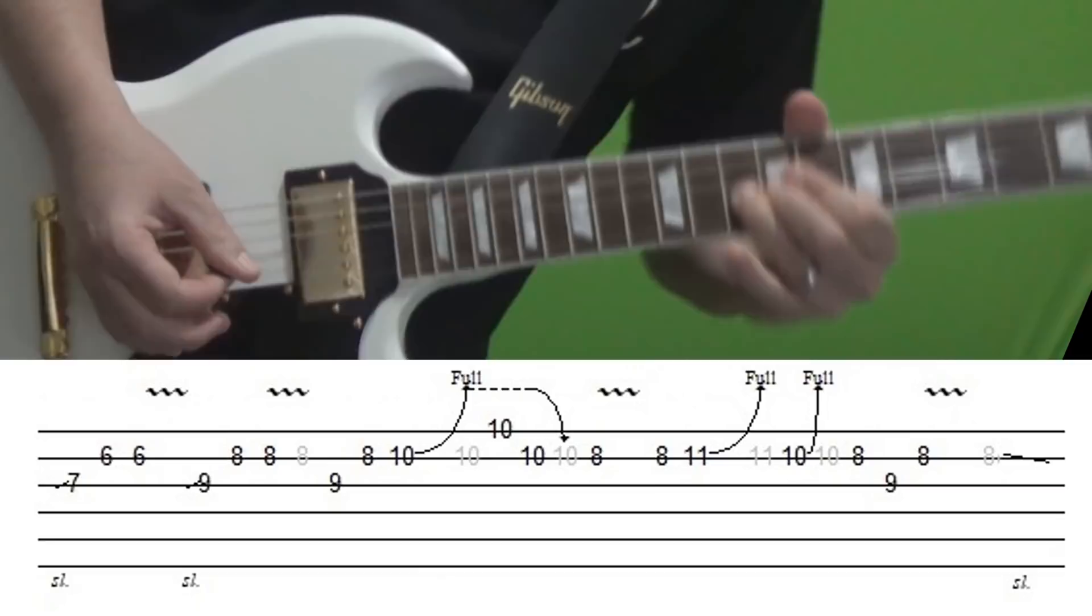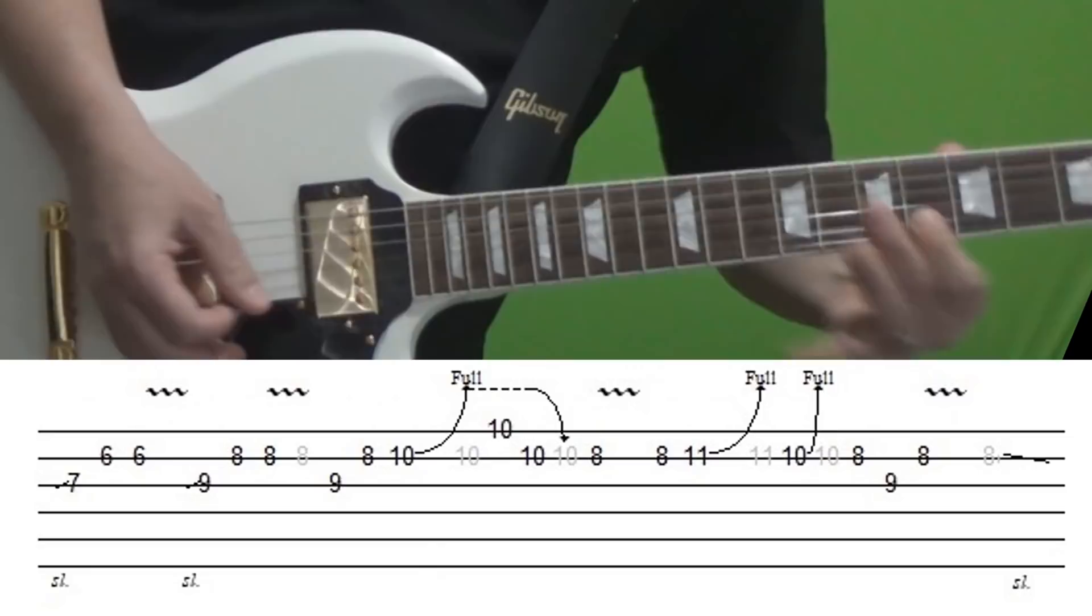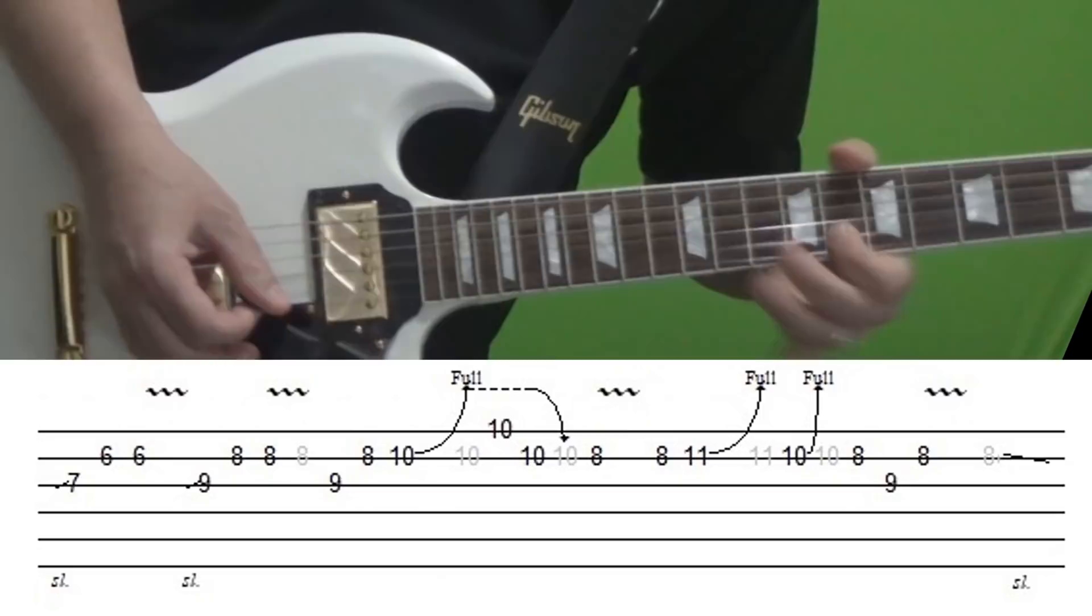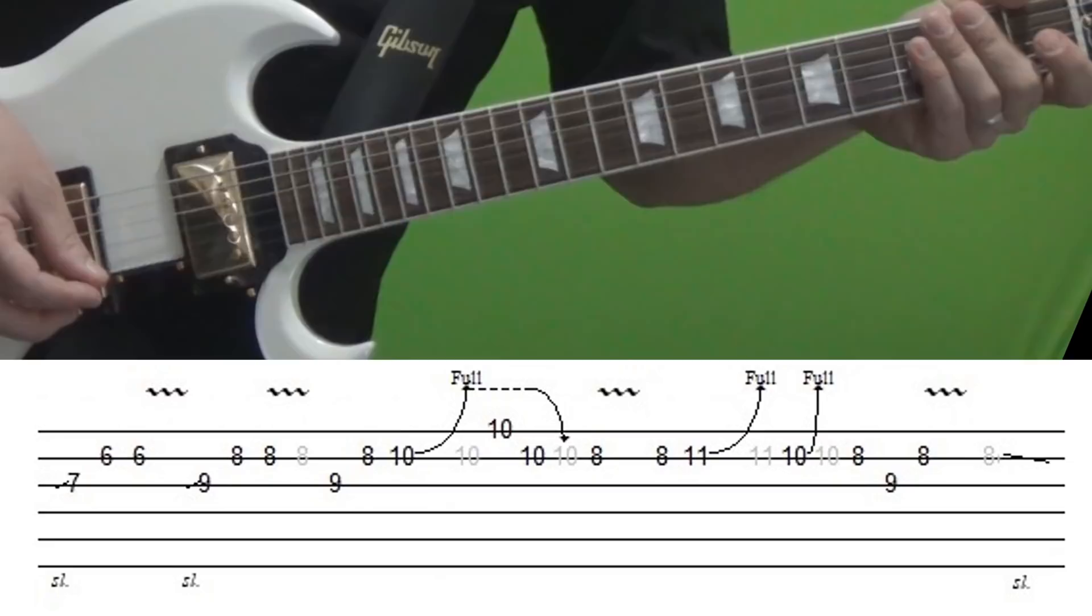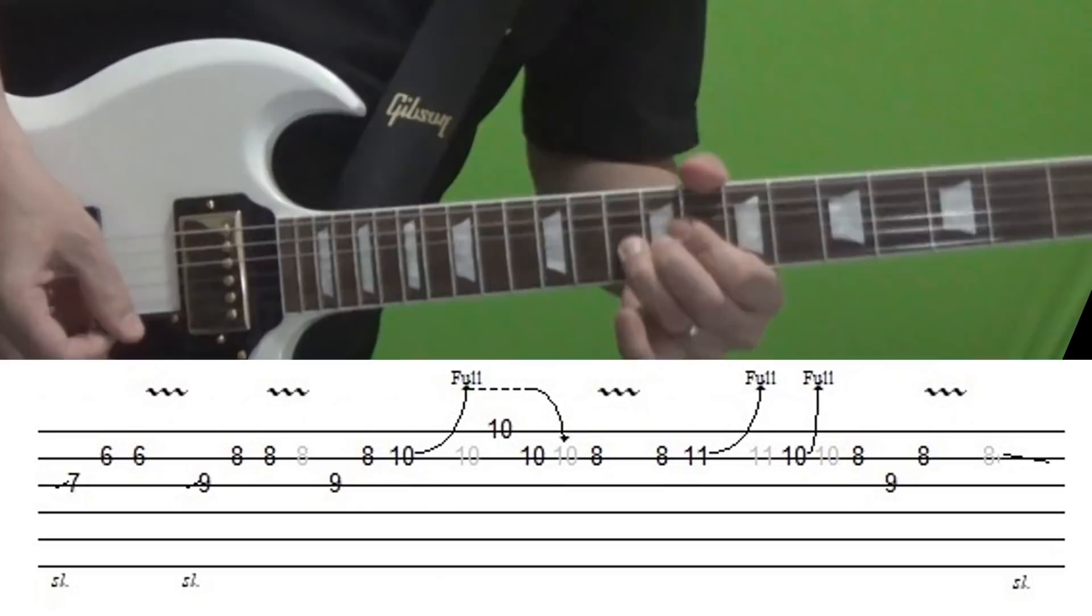Now, section three. Slowly. All right, now in terms of that one, the tabs are pretty self-explanatory. It should be somewhat easy to follow.